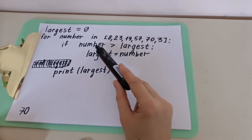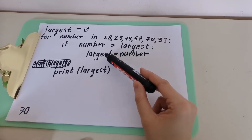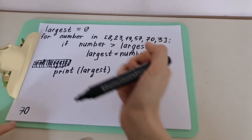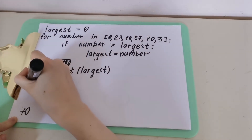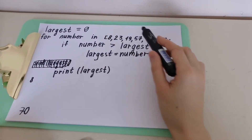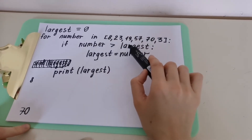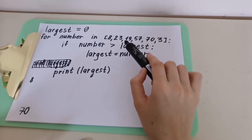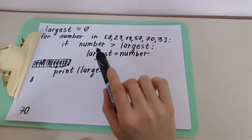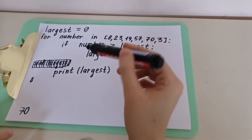The first number is 8. Is 8 greater than `largest` (which is 0)? Yes, so `largest` is now 8. Python prints 8. Next is 23. Is 23 greater than 8? Yes, so `largest` is now 23. Python prints 23.